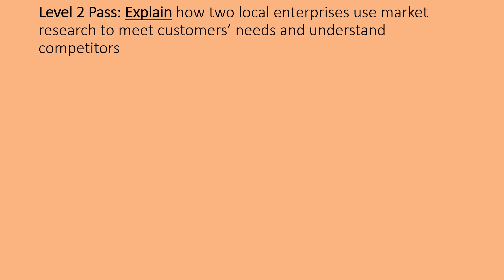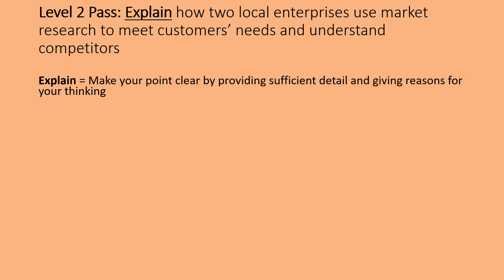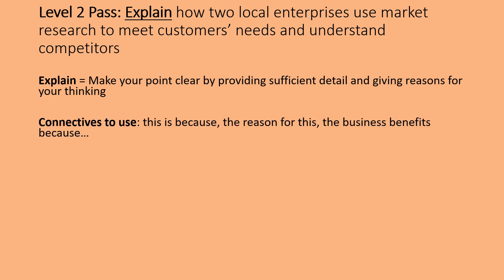At level two pass, we are now being asked to 'explain' how two local enterprises do the same thing. The word 'explain' means we're making our point clear by providing sufficient detail and giving reasons for our thinking. The most important thing to getting an explain is using the correct connectives — things like 'this is because,' 'so,' 'therefore,' 'the reason for this is,' 'the impact of it is.' All of these are great connectives to use, and you must make sure you're including them if you want to get a level two pass.